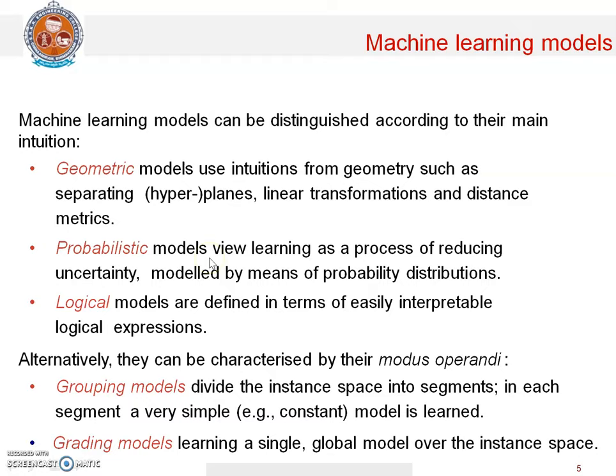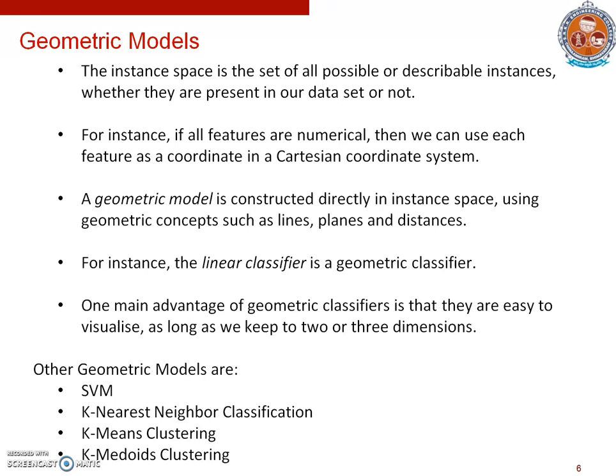In geometric models, the instance space is the set of all possible or describable instances, whether they are present in our dataset or not. For instance, if all features are numerical, we can use each feature as a coordinate in a Cartesian coordinate system. A geometric model is constructed directly in the instance space using geometric concepts such as lines, planes, or distances.